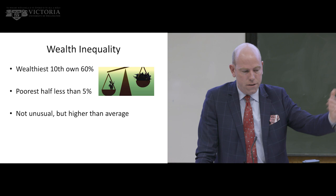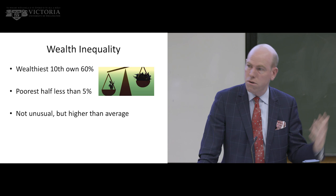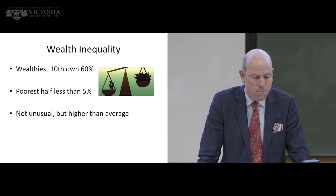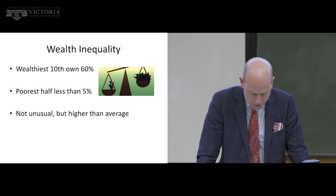In contrast, the rest of the middle class — the next chunk of the population — have about 35%. But that leaves the poorest half of the country with less than 5% of all net wealth. That's a reasonably high level of wealth inequality — higher than the inequality of income. Wealth is much less equally distributed than income, and it's high by international standards as well.